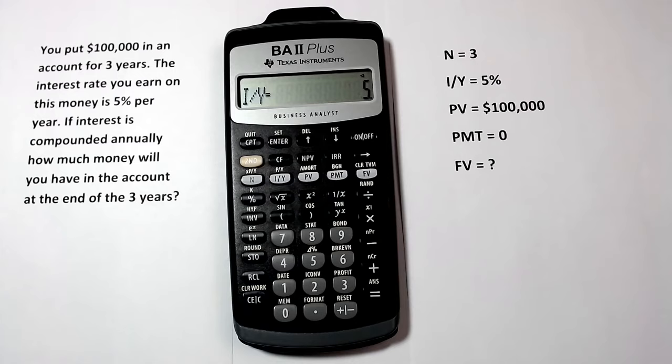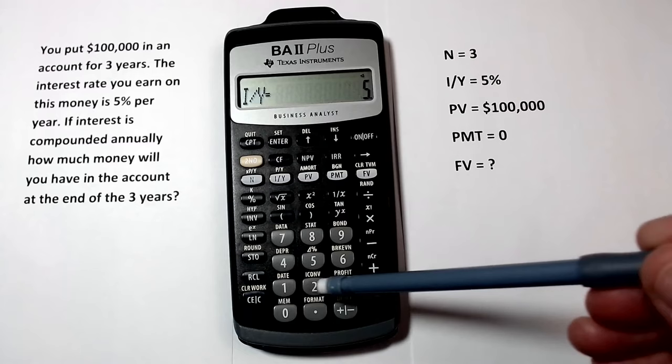A good way to think about this is to imagine the money leaving your hands and going into an account. It's a negative to you. This may help you visualize and remember why present value for problems of this sort need to be entered as a negative number. So we'll press 100,000, make it negative, then press PV for present value.